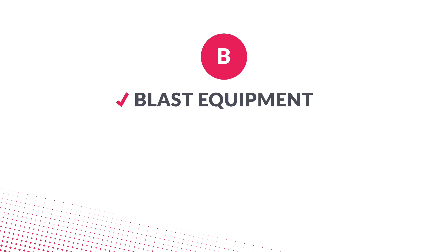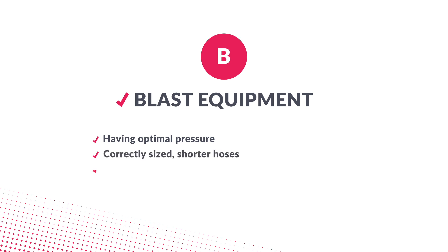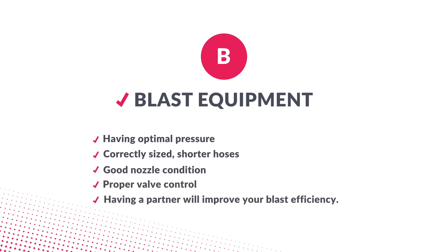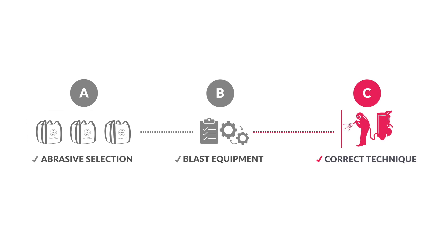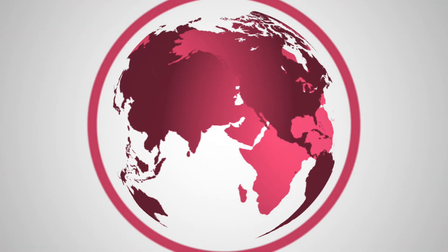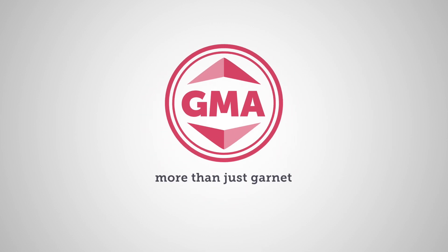In this video, we explained how blasting equipment can affect the overall efficiency of your blast operation: having optimal pressure, correctly sized and shorter hoses, good nozzle condition, proper valve control, and having a partner to adjust the abrasive metering will improve your blast efficiency. In the next video, Part C demonstrates how having the correct technique can help achieve an optimal blast performance. Optimizing blast performance can be as easy as ABC — selecting the right garnet abrasive, blast equipment, and ensuring the correct blast technique will help you perform an efficient and effective blast operation. GMA: more than just garnet.